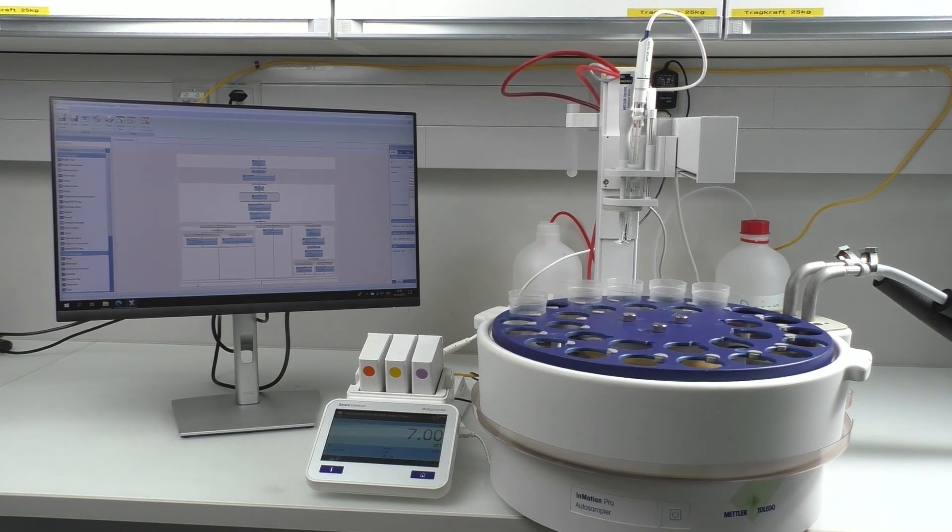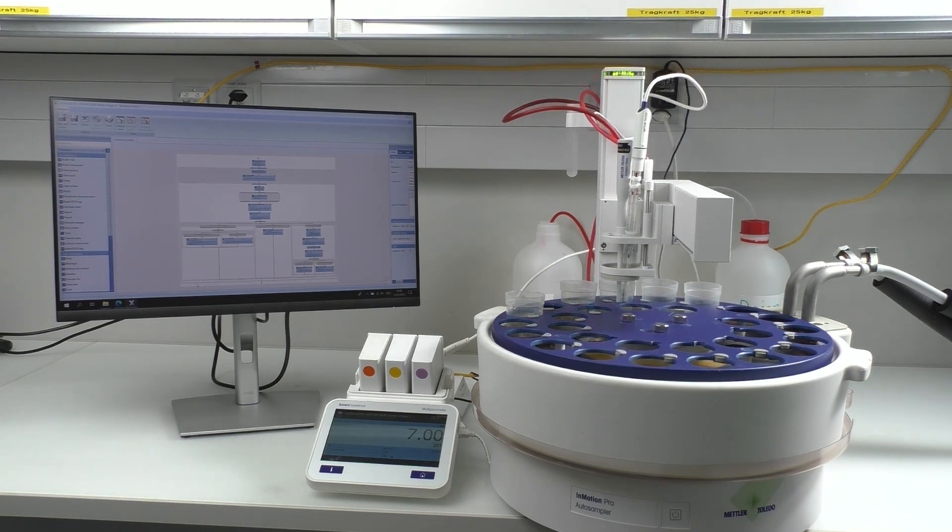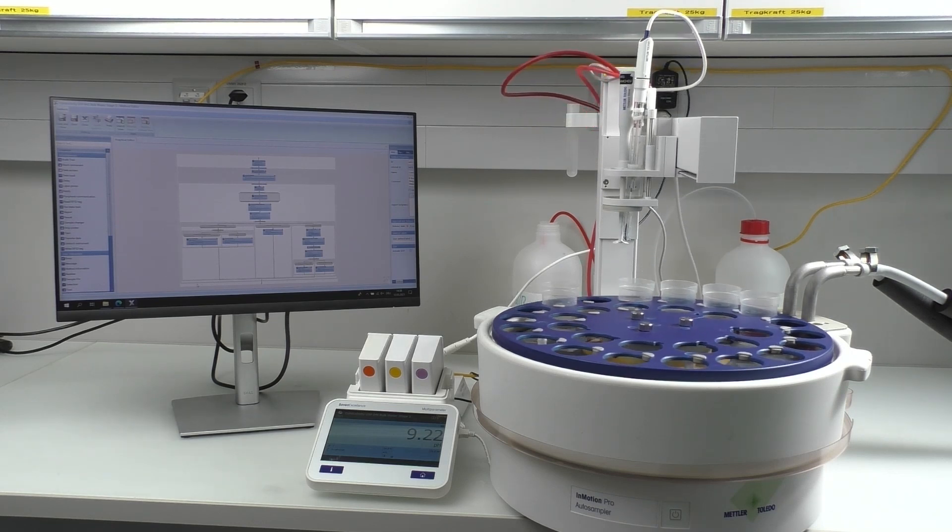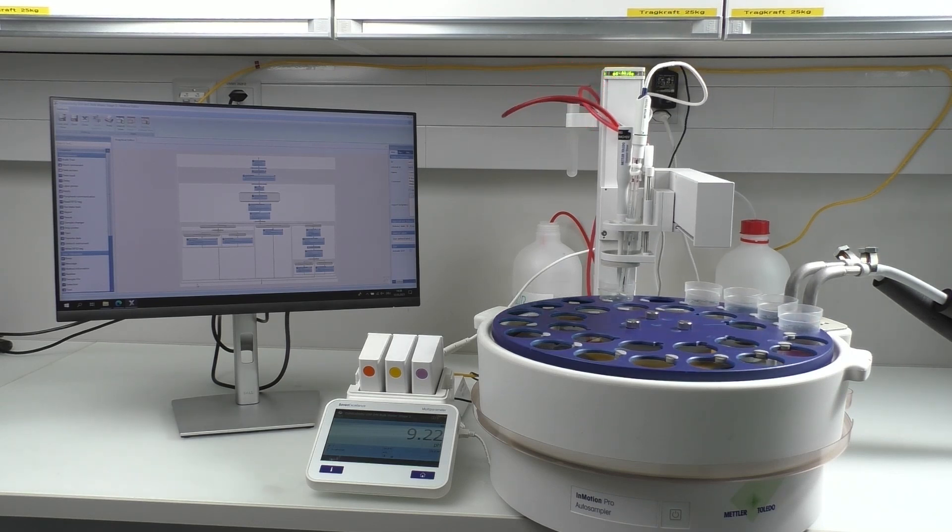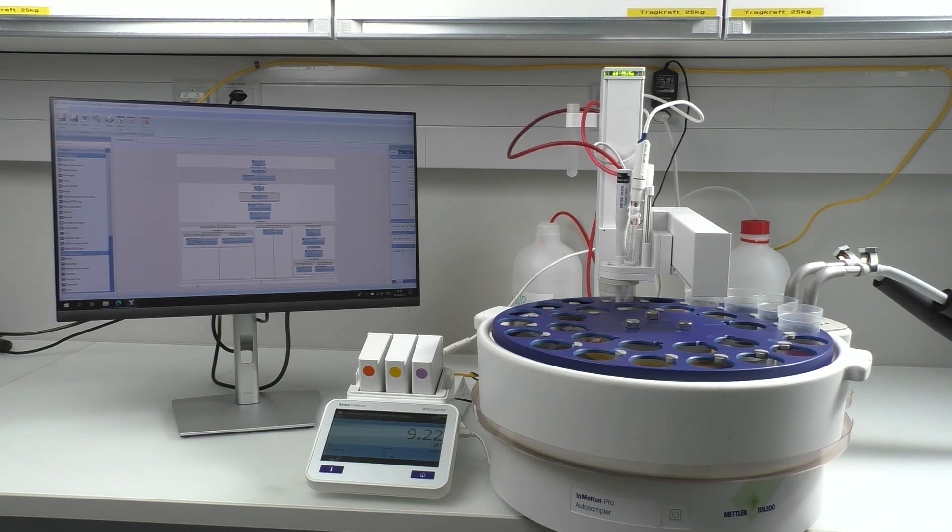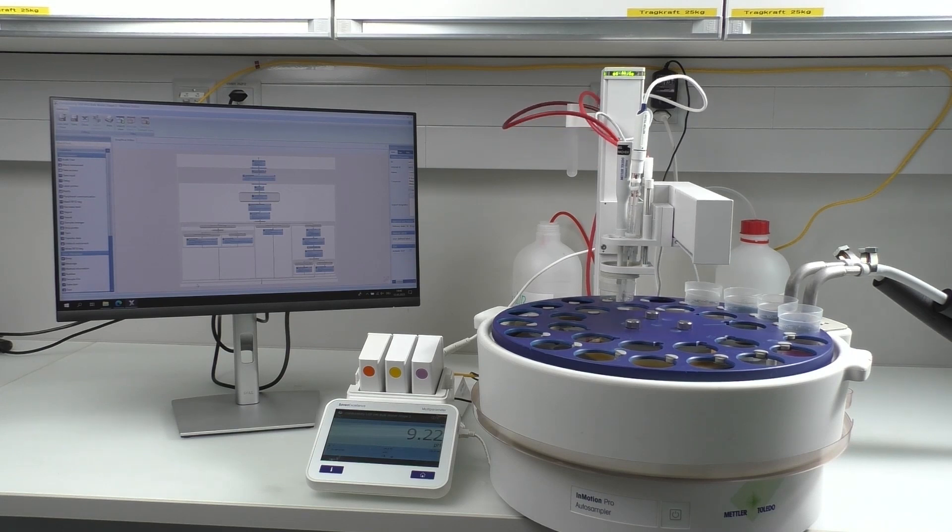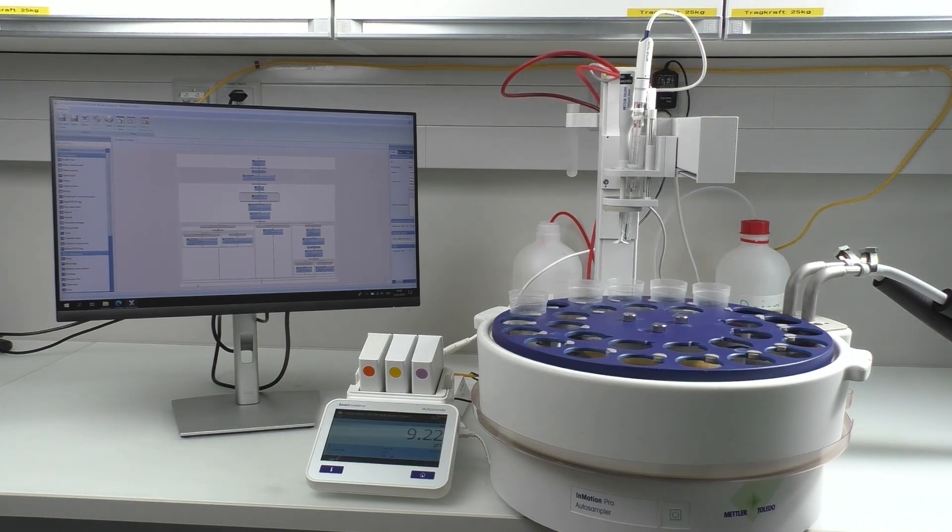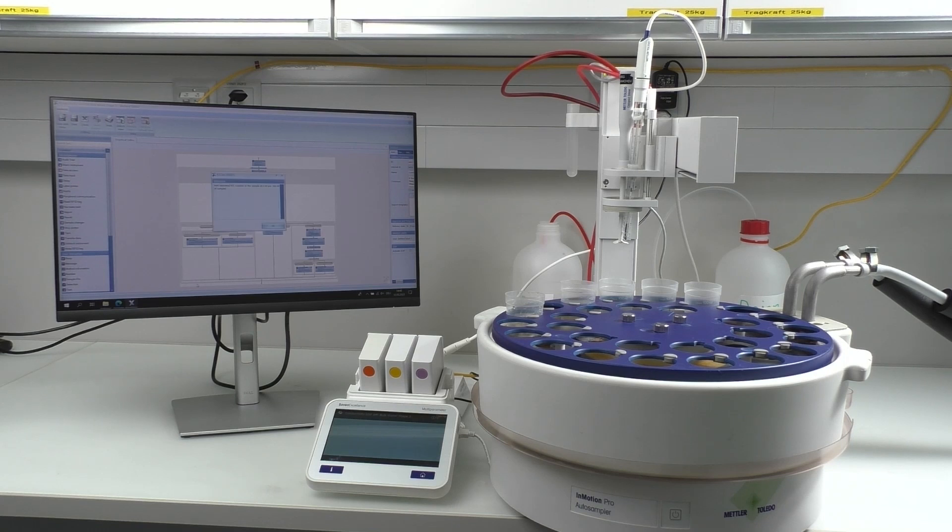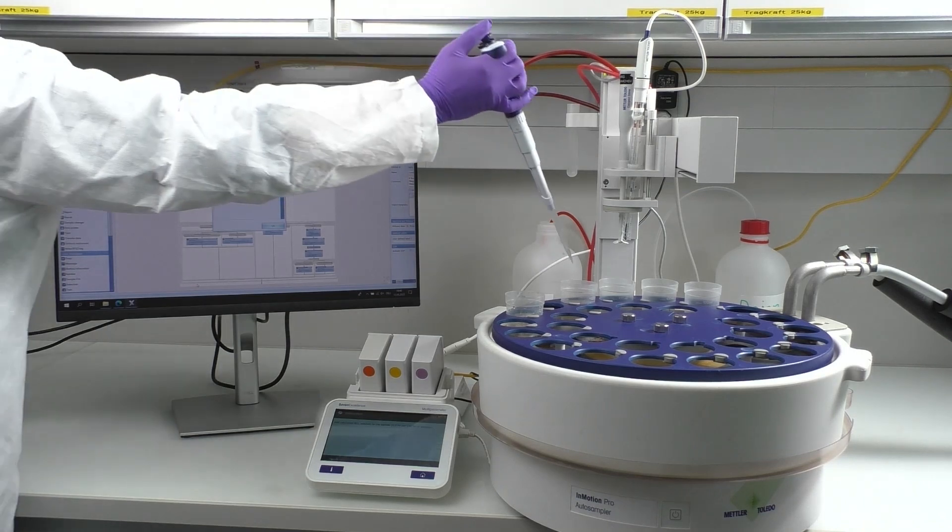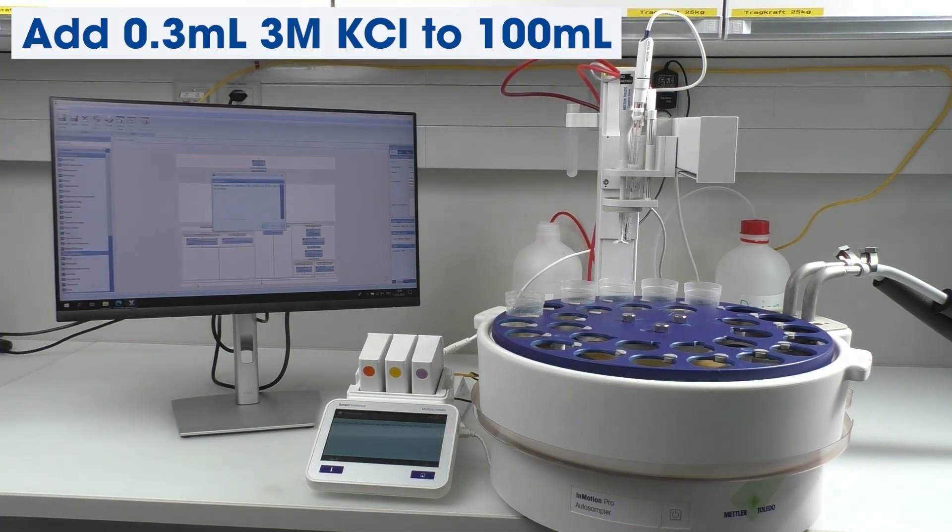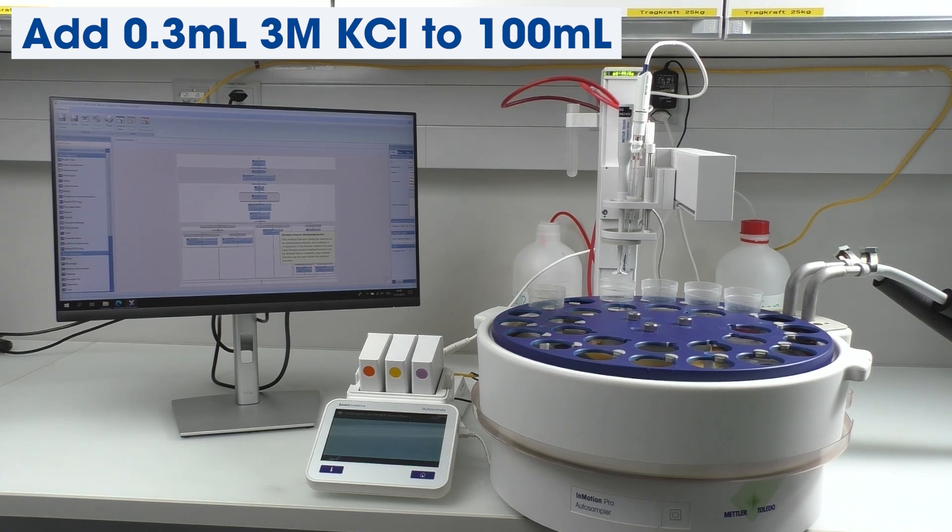In our case, the electrode has very good performance, so we can move to the measurement step. In order to adjust the ionic strength, 0.3 milliliters of 3 molar KCl is added to 100 milliliters of the previous sample. Now we can measure pH.